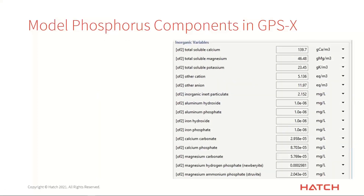Another useful place is the main menu. If you slide down towards the bottom in the inorganic variable section, amongst all the various inorganic things, you'll note aluminum phosphate and iron phosphate — the precipitates formed if you're doing chemical phosphorus removal. Down at the bottom there's struvite — magnesium ammonium phosphate — and a few other ones potentially being generated as well. I'll come back to this menu during the demonstration to show places where we're actually precipitating out struvite.